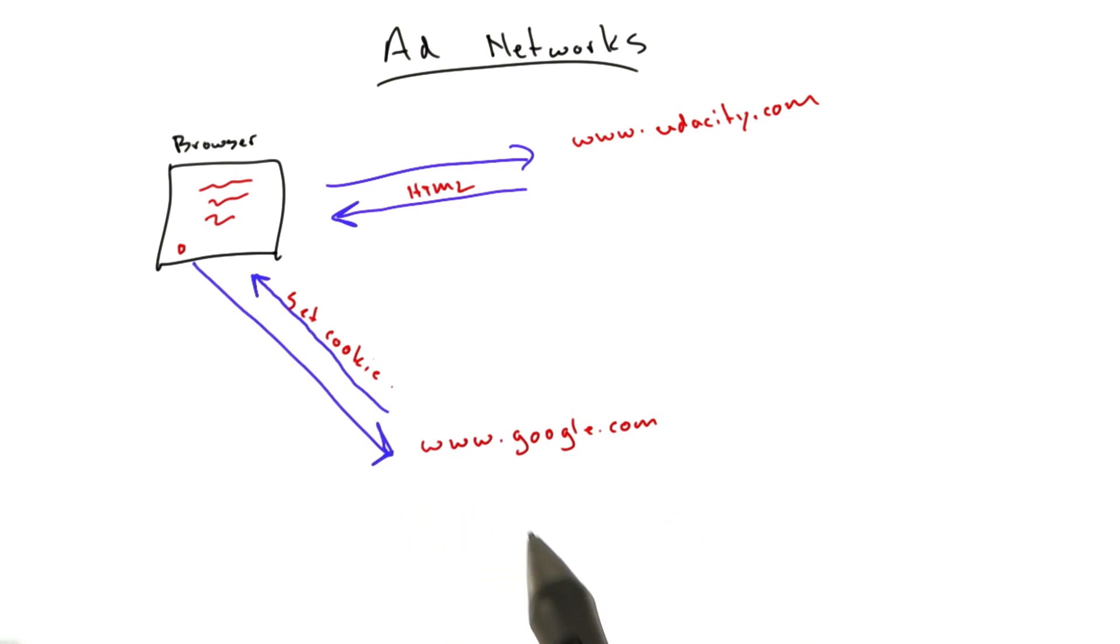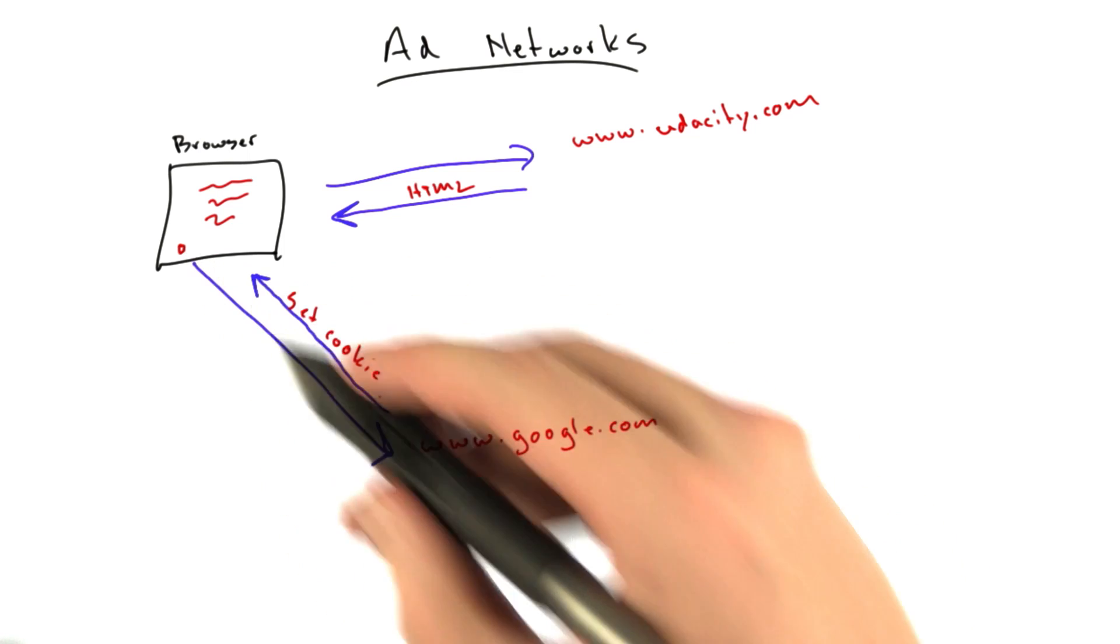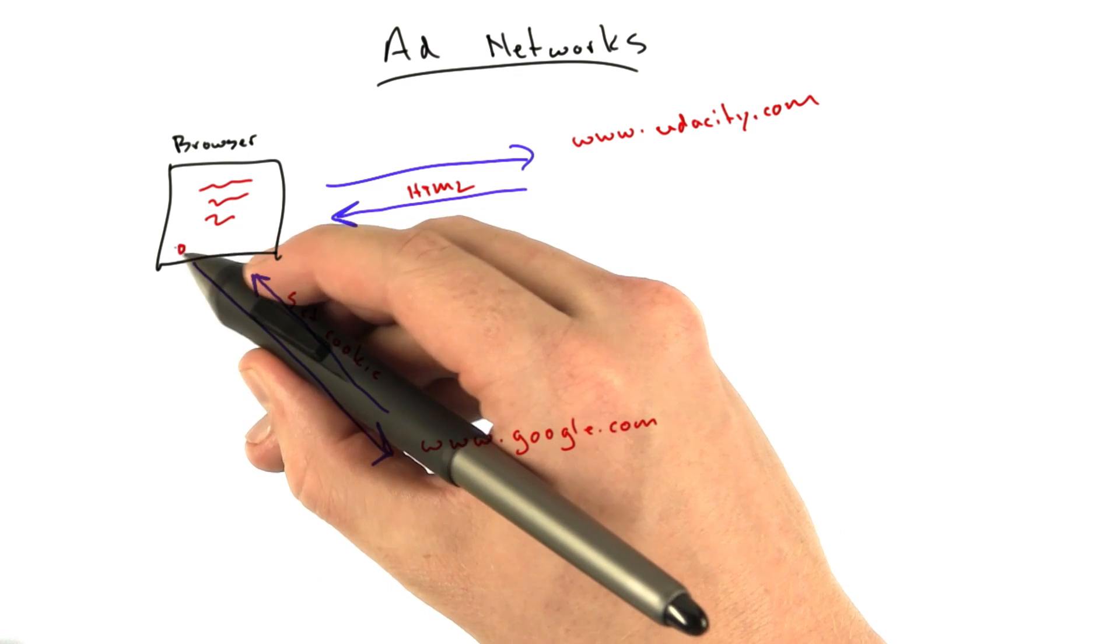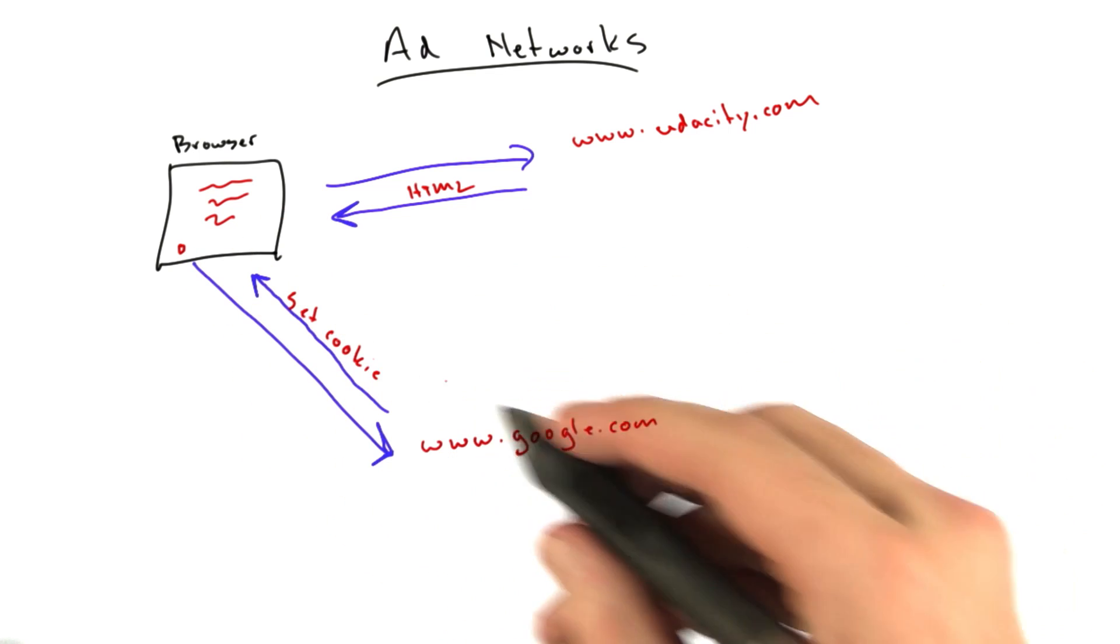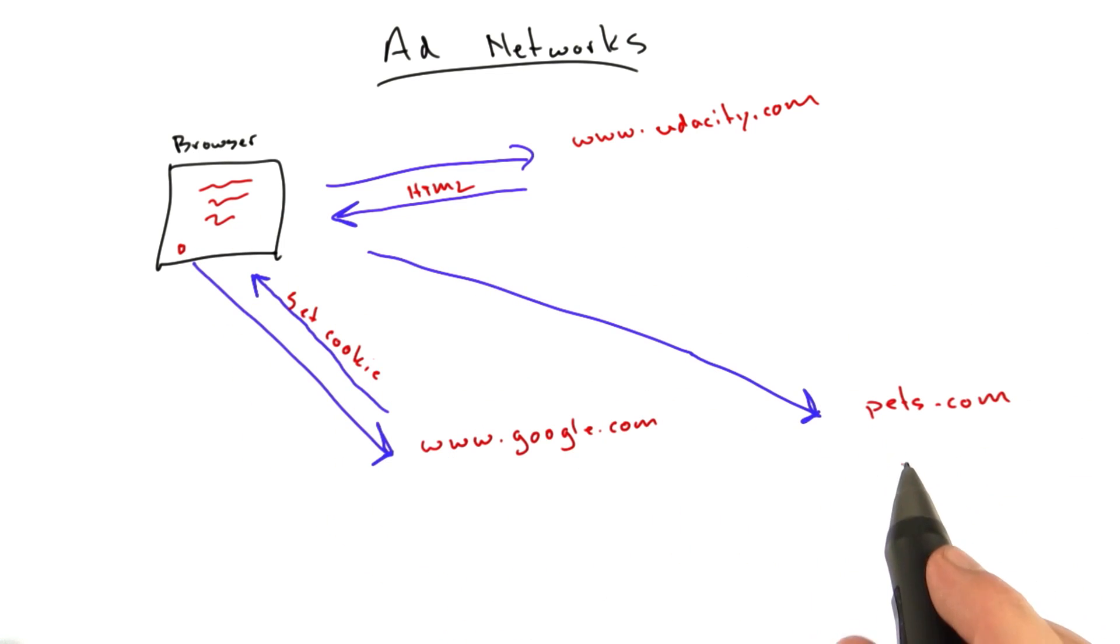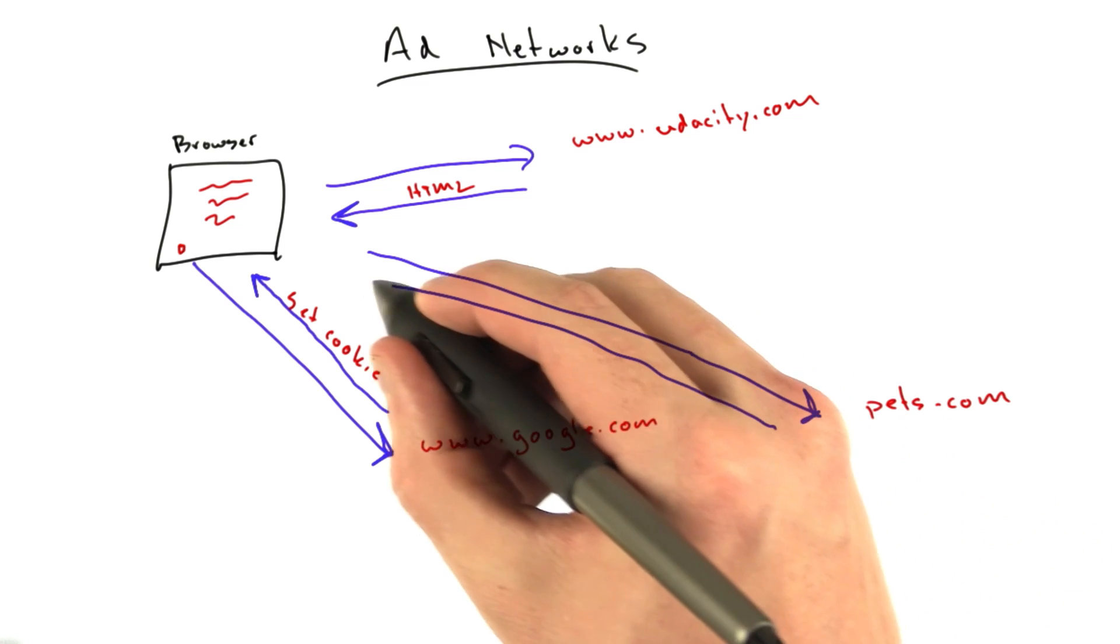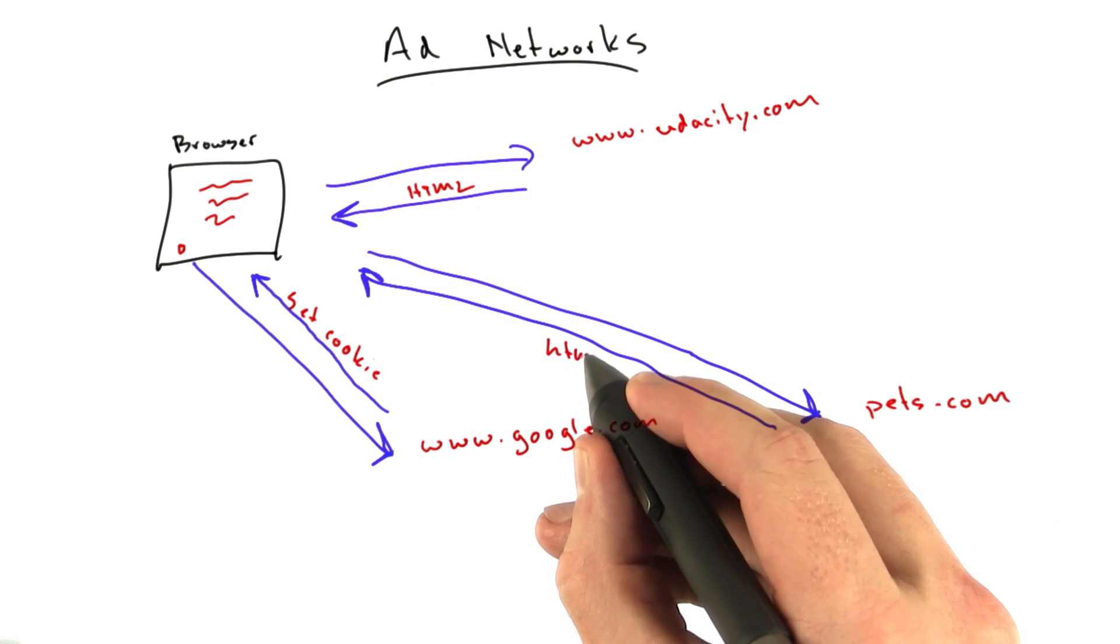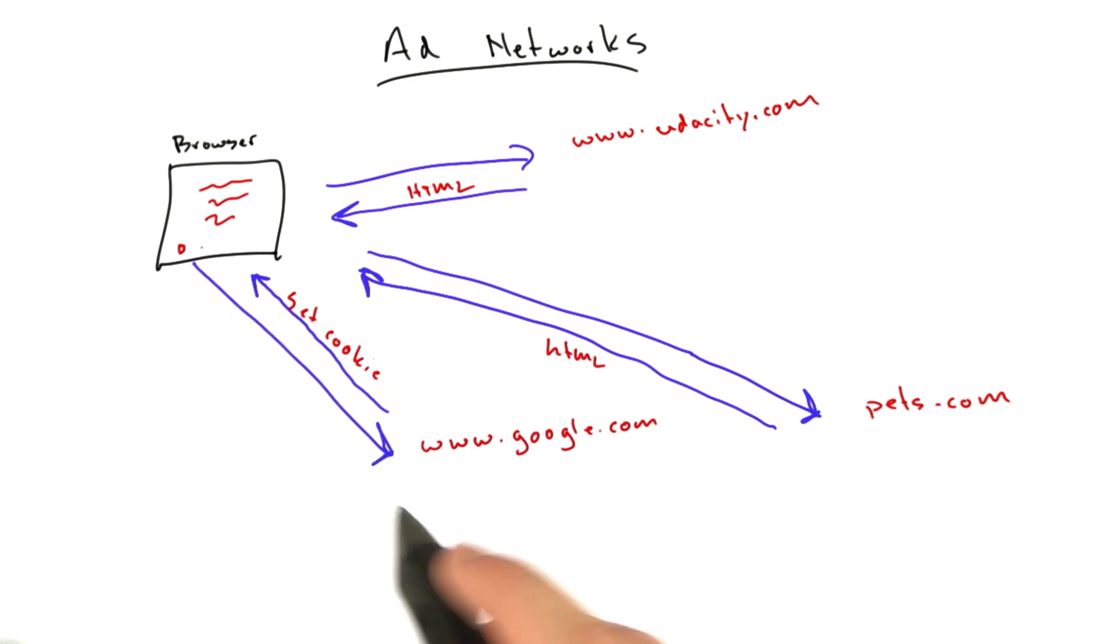There's also more sinister uses, which is actually, Google is a big user of this. Now Google knows something about you, they know that you've been to this website. And you may go to another website, let's say it's pets.com, and pets.com returns HTML, as usual. And it has the same pixel, which goes to google.com.